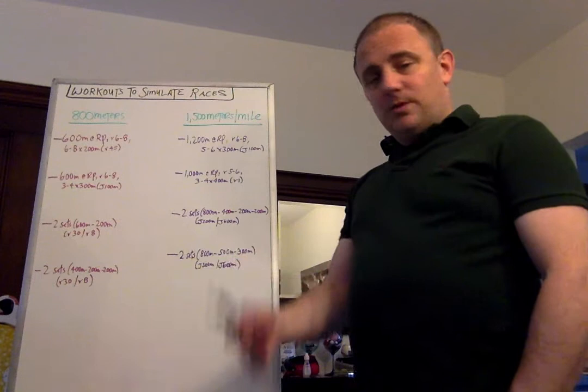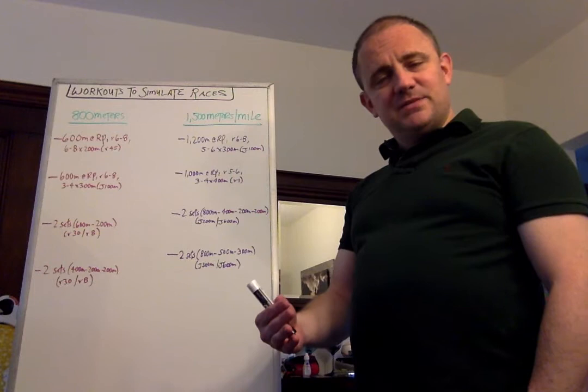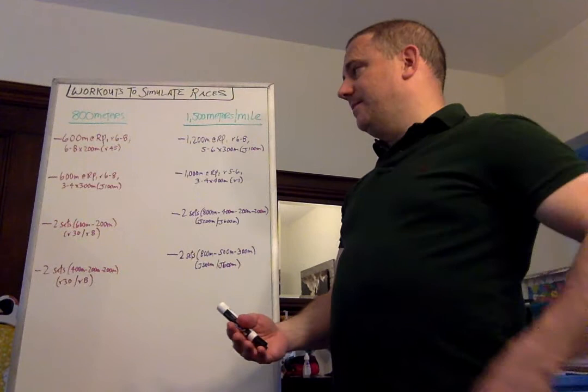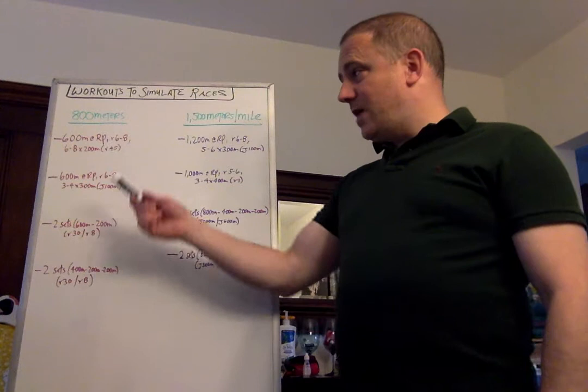Second one, 600 meter effort again at goal race pace. Six to eight minute active recovery, but instead of 200s, you try 300s at the end now. And what it does is it helps simulate not only kicking from 200 meters out, but kicking from 300 meters out. You never know when folks are going to respond or make their move at an 800 meter. So you want to be able to either be ready to respond to them or make a move of your own. So this gives you another option.